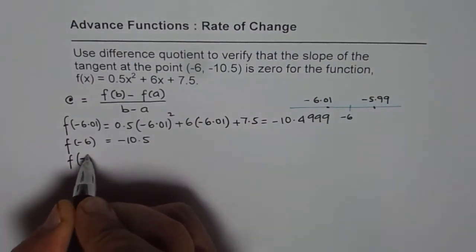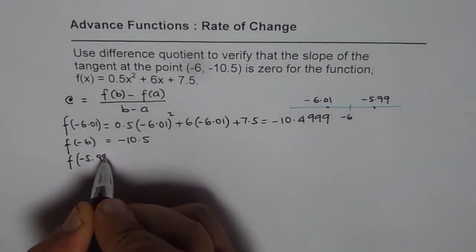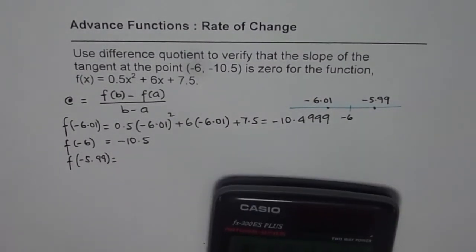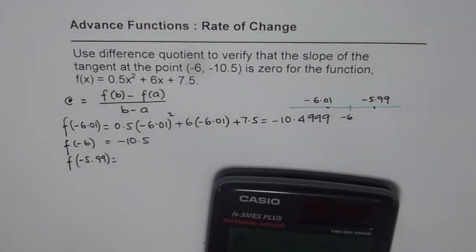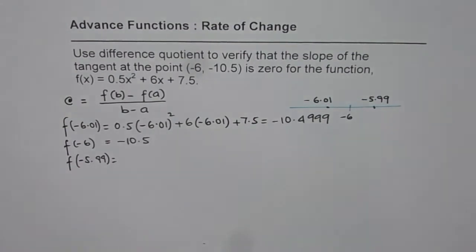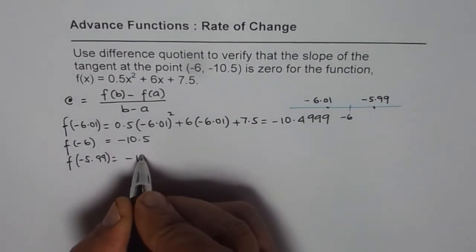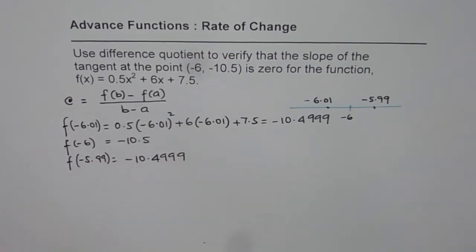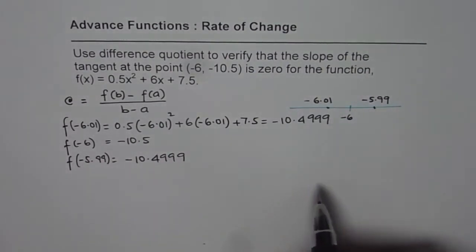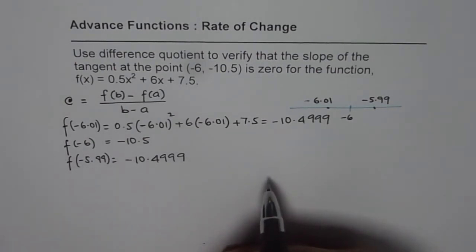Now let us find f(-5.99). Substitute -5.99 for x: 0.5(-5.99)² + 6(-5.99) + 7.5, which also equals -10.4999. So we now have all three values needed to find the preceding and following rates of change.